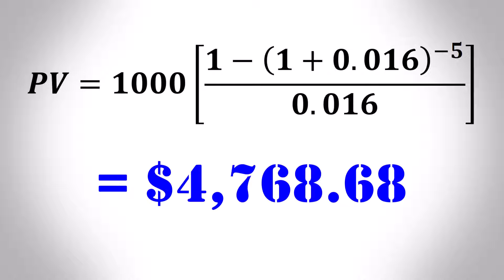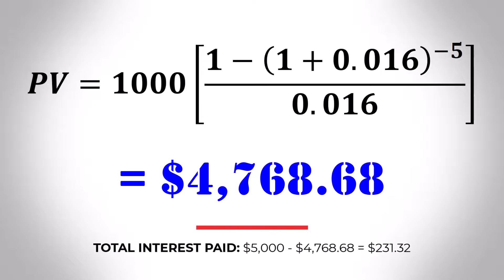This means that to obtain a loan worth this much today, you must be willing to pay $5,000 by the end of the loan, which amounts to a difference of $231.32 more than its current worth due to interest.